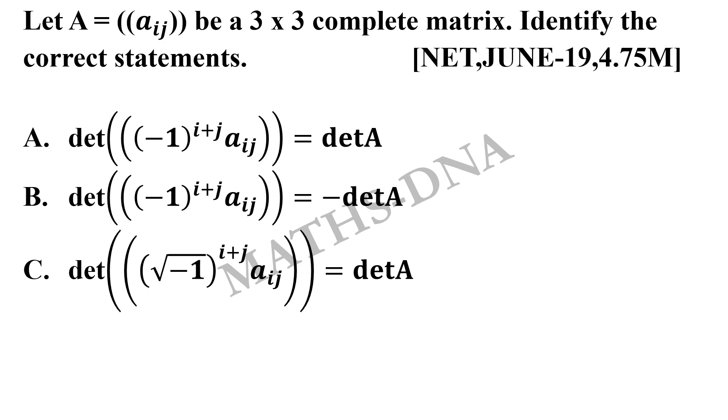Here simply you can take minus 1 as i square. I will tell you further in the solution how to do that. And in option D, it says under root of minus 1 raised to i plus j Aij equals to minus determinant of A. I would recommend you to pause the video over here and first try this question by yourself.